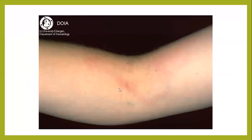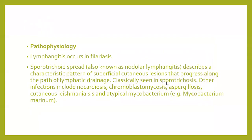The usual clinical appearance is in the form of cords of inflammation — red cords of inflammation. Pathophysiology: lymphangitis occurs in filariasis and sporotrichoid spread, also known as nodular lymphangitis. This is characterized by a pattern of superficial cutaneous lesions that progress along the path of lymphatic drainage. The sporotrichoid spread is linear and the spread of infection is along the lymphatic cords, so different nodules develop along a track of lymphatics.